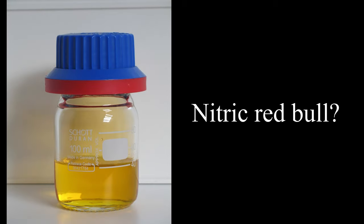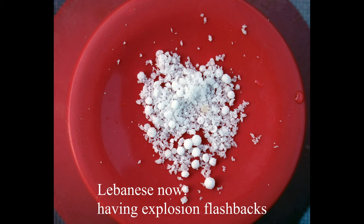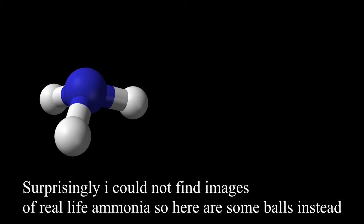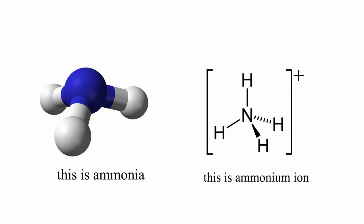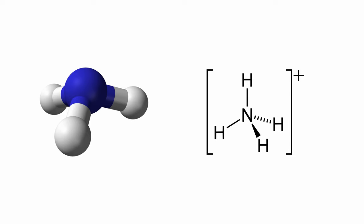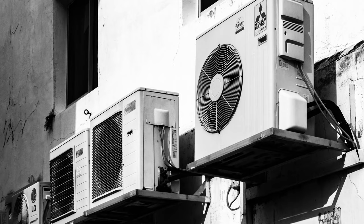Nitric acid, for example, is a very useful acid. It is widely used in labs and industrial production such as the production of ammonium nitrate, which is an explosive, and potassium nitrate, more commonly known as saltpeter. Another useful compound is ammonia. A lot of you might be confused between ammonia and ammonium: ammonia is NH3, so there are 3 hydrogens, and ammonium has 4, therefore ammonium is a positive ion used in fertilisers, while ammonia is widely used in the production of nitric acid, nitrogen fertilisers, and also as a coolant for refrigerators and air conditioners.